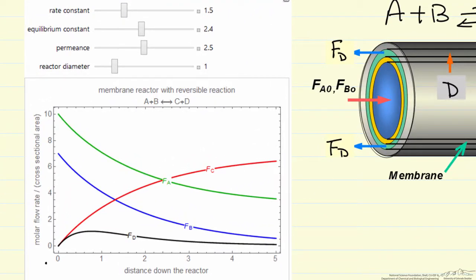So what I'm plotting here is the molar flow rate divided by the cross-sectional area, and I'm doing that because in the simulation we can vary the diameter, so in order to make a relative comparison, we're looking at the flow rate per area.